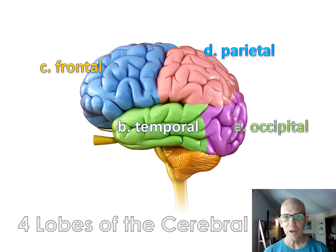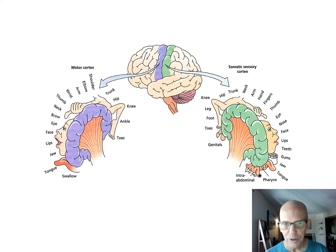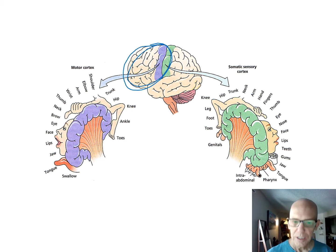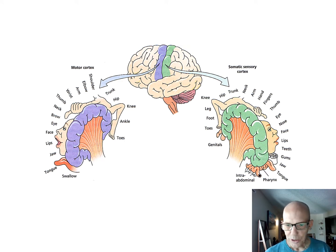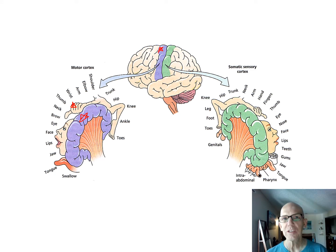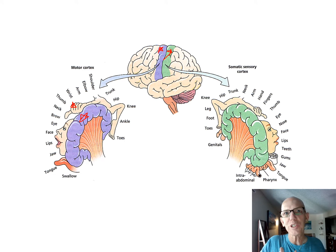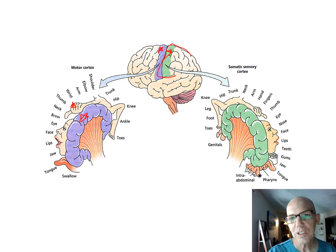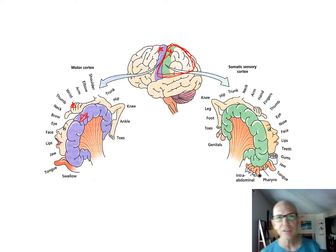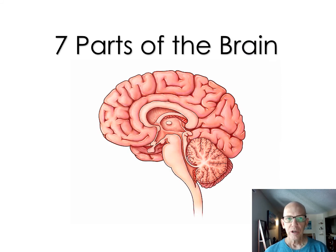Finally, the parietal lobe handles temperature, touch, and taste. To review: occipital is vision; temporal is hearing and smell; frontal is thinking and voluntary body control; parietal is temperature, touch, and taste. Right now I'm controlling this pen with my hand — that's frontal — while at the same time I feel the pen in my hand, which is parietal. Meditating monks can apparently disconnect from their body and essentially turn off this parietal section.